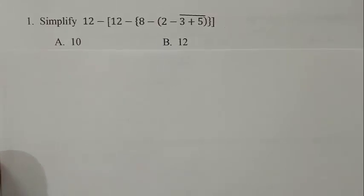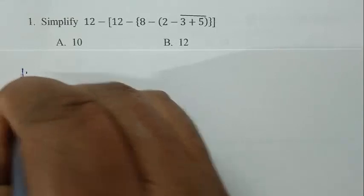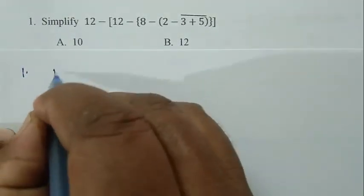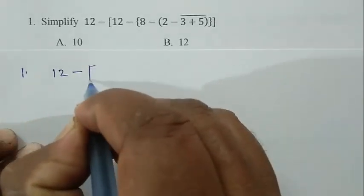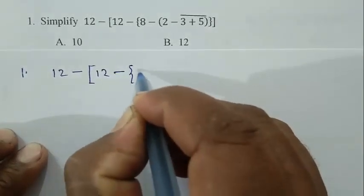Question number one: simplify this. We have to write it and solve one by one. Question number one, simplify 12 minus bracket 12 minus bracket 8 minus bracket 2 minus 3 plus 5.